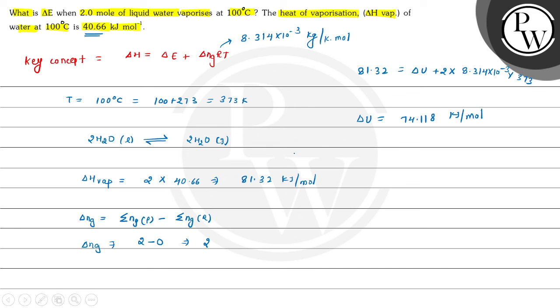Hence, when 2 moles of liquid water vaporize at 100°C, the change in internal energy will be 74.118 kJ/mol. Hope you understood the explanation well. All the best and thank you.